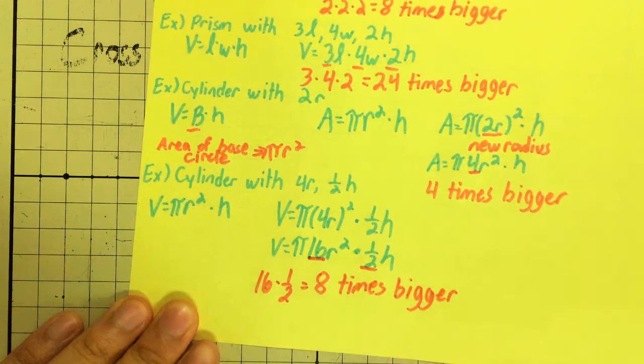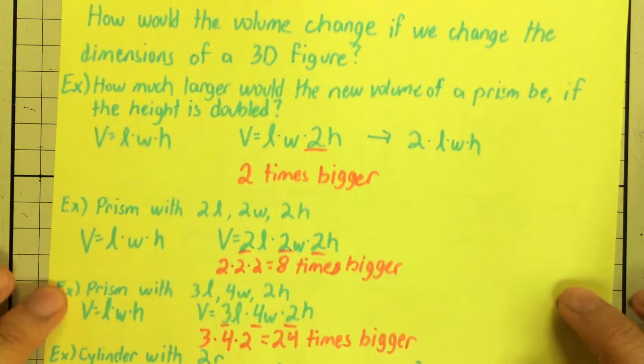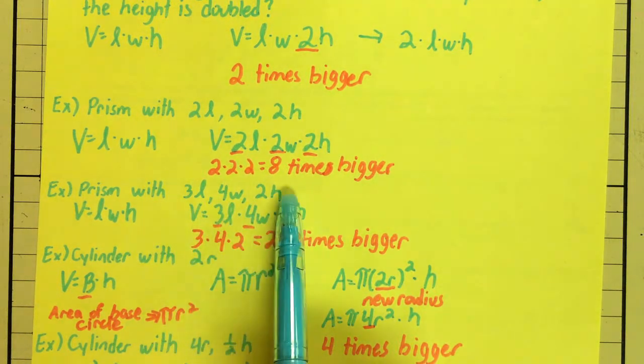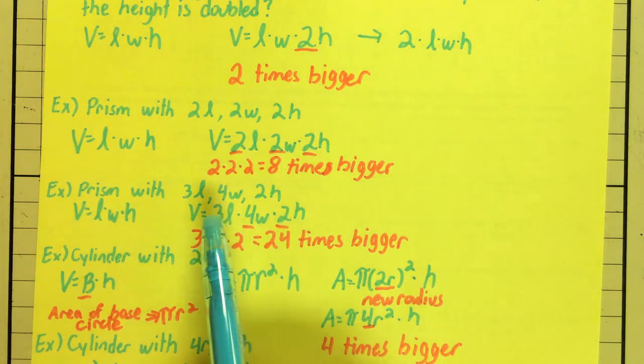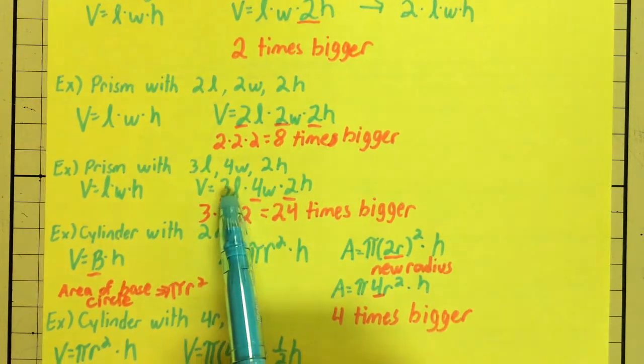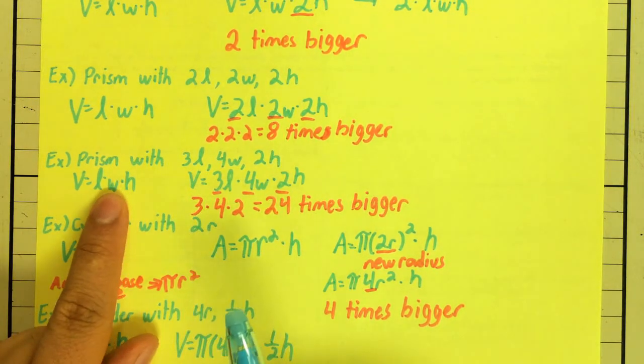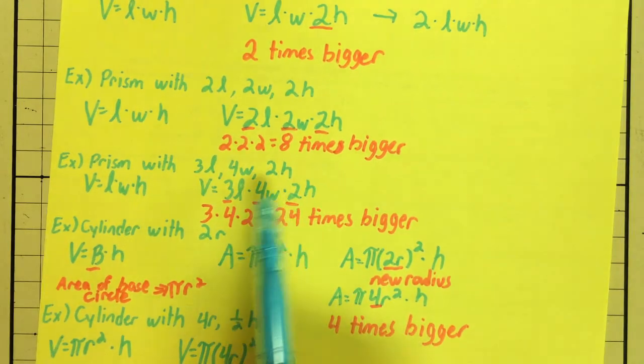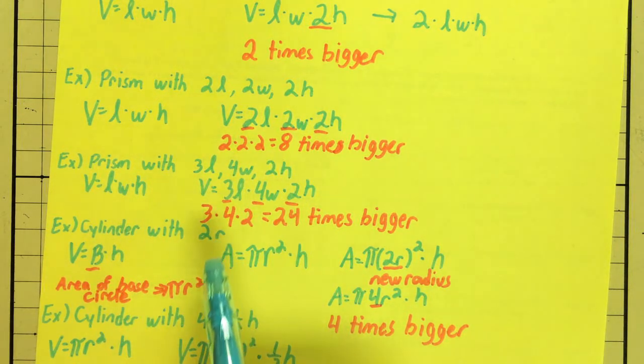So, there you have dimension change for 3D figures. Key idea here is to look at the problem and figure out what changes happens to my dimensions. Using those changes, plug them into your equation. So, instead of L, I now have 3L. Instead of W, I now have 4W. Instead of H, I now have 2H. And then, comparing your new formula with the old formula, see what's different.